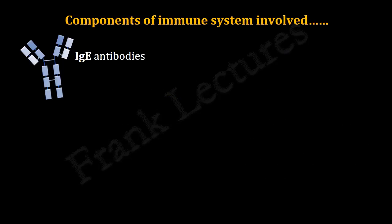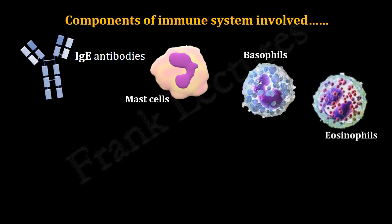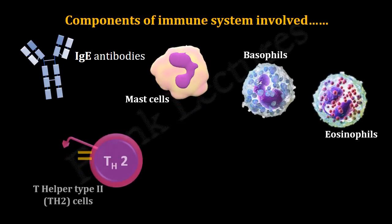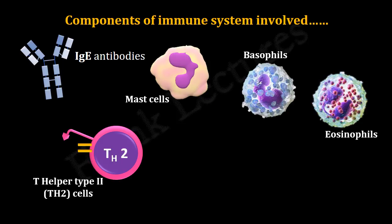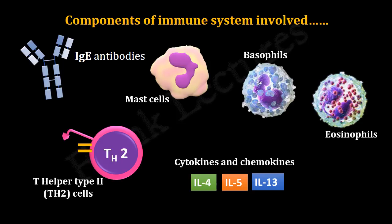The main cells of the immune system involved in type 1 hypersensitivity reactions are mast cells, basophils, eosinophils, and T-helper type 2 cells. Cytokines and chemokines secreted by these cells — such as interleukin-4, interleukin-5, and interleukin-13 — play a major role in the manifestation of these reactions.